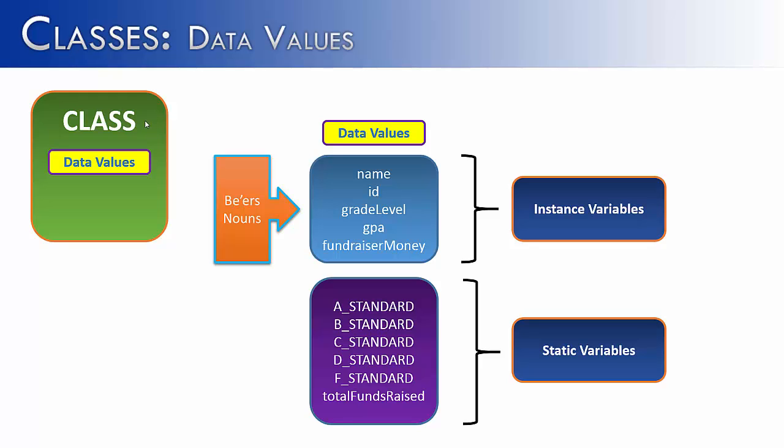Static variables rather than applying to just one student would apply to all students. So we have A_STANDARD, B_STANDARD, C_STANDARD, so on and so forth. And what A_STANDARD means is that what is the standard to make an A in this particular class? And all of the members of the class whether they be Jose or Susie or Billy or Tommy or whoever else is part of the class all have to make let's say a 90 in order to make an A in the class or an 80 to make a B in the class. And these would be true for all students.